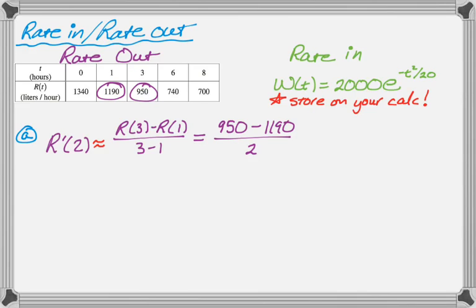That gives us negative 120, and then we need to include the units. The units in the numerator are liters per hour, and in the denominator it's hours, so it's liters per hour per hour, which is liters per hour squared. And that's part A, so let's move on to part B.